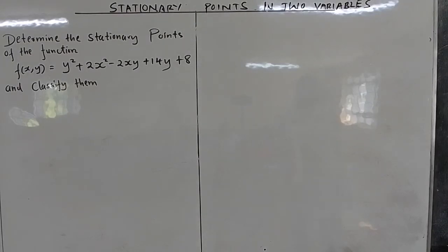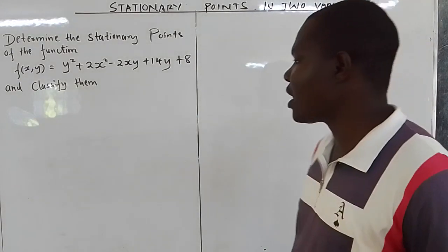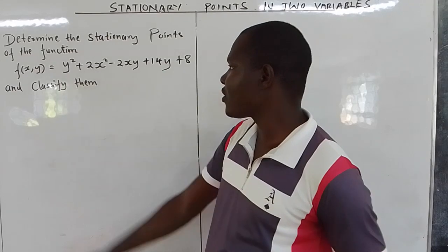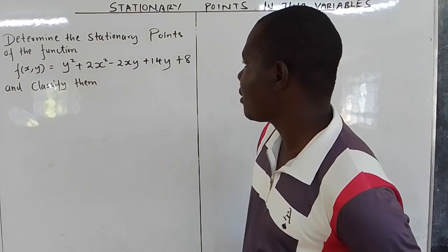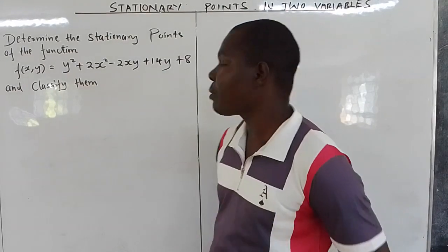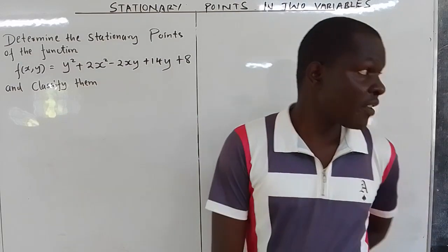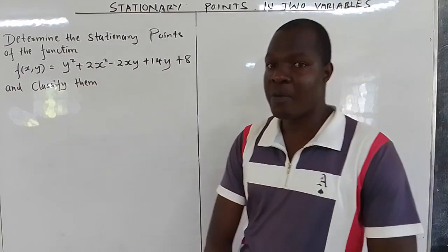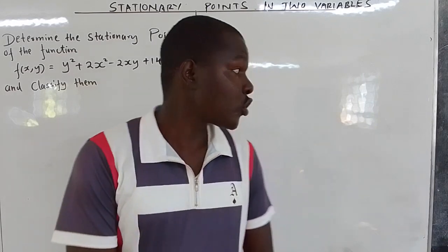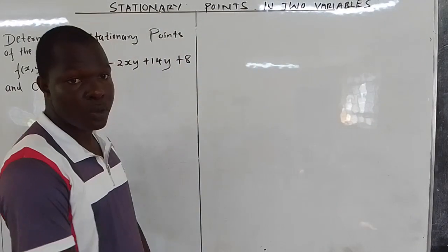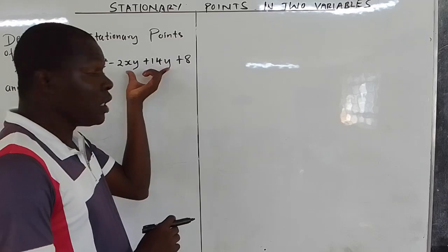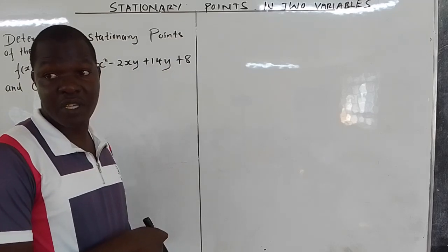This next example asks us to determine the stationary points of the function f(x,y) = y² + 2x² - 2xy + 14y + 8 and classify them. As usual, the first step is to find the partial derivatives.